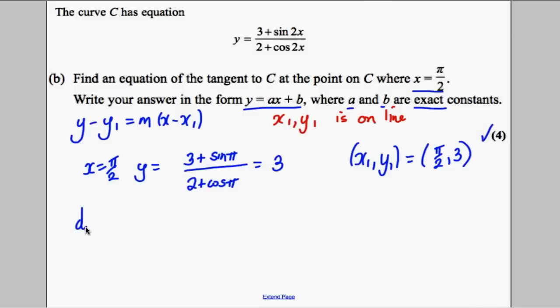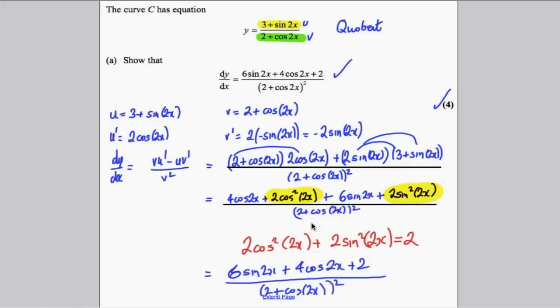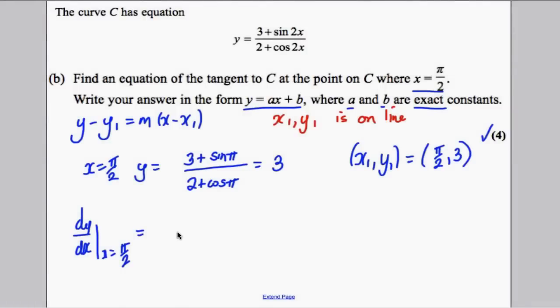Now, what is the gradient at the point x is equal to pi by 2? Well, all you have to do is substitute pi by 2 into this here. So if you substitute pi by 2 into this here, you would get yourself, just working through it in the calculator, you would get negative 2. Therefore, your m is equal to negative 2.